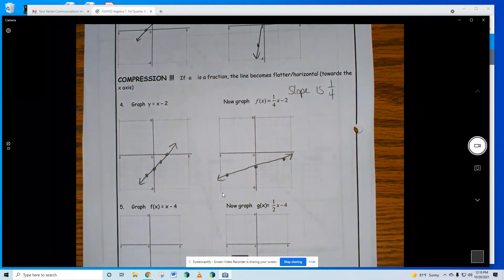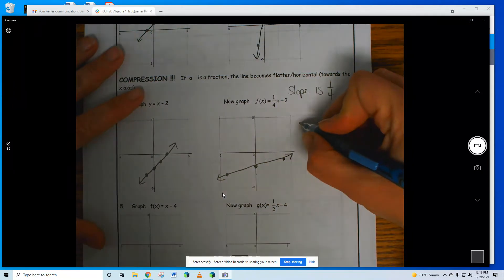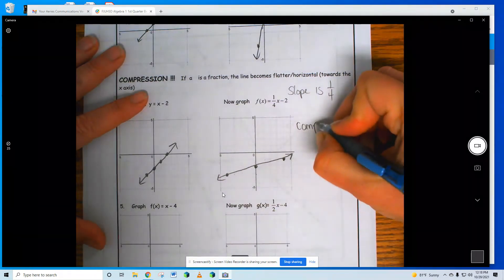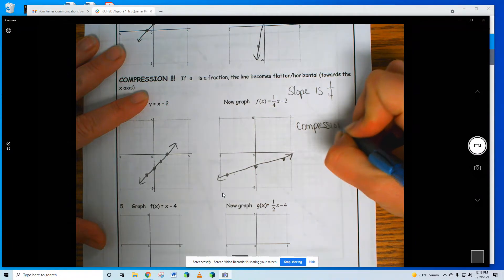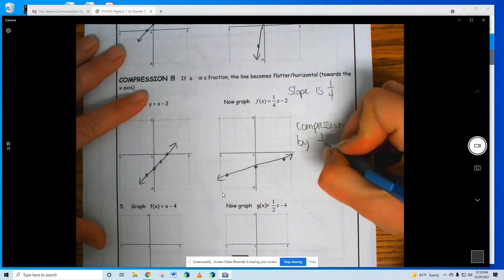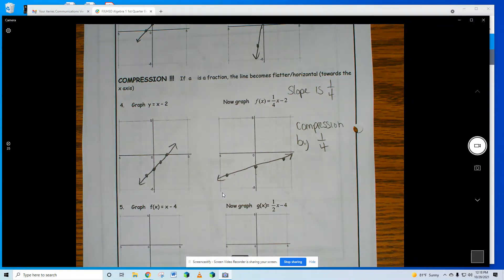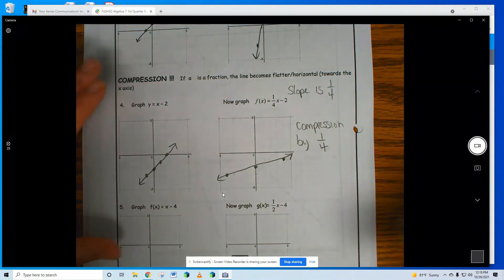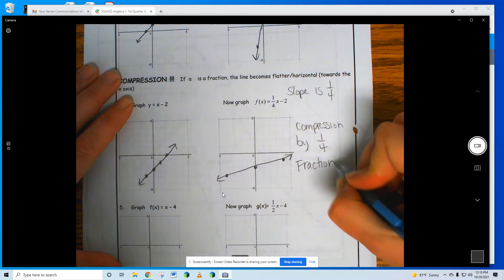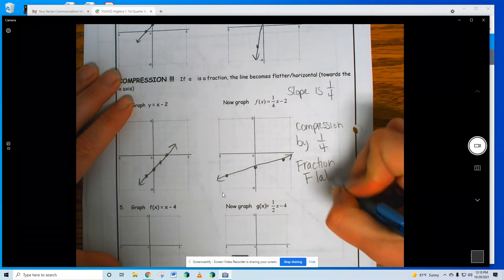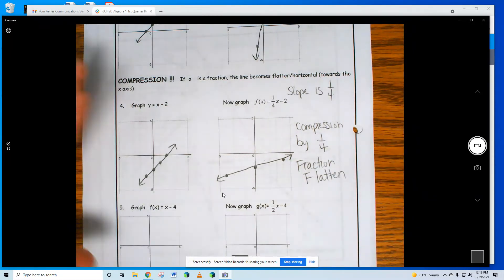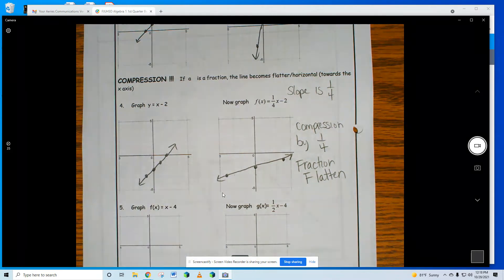Okay, what's happening? This is called a compression. Fraction by 1/4. That's what's happening. I'm compressing, I'm flattening. Fraction, flatten. Yeah, it's a way for you to remember the fraction means that it gets flattened.